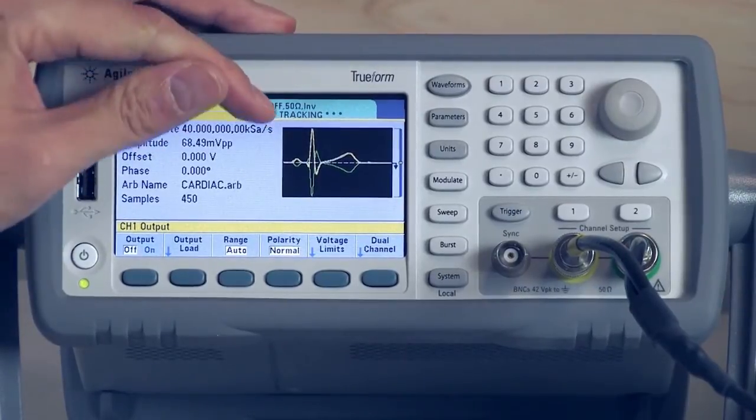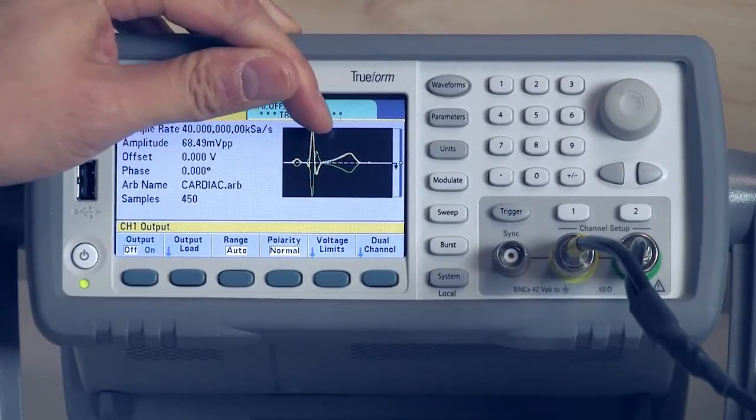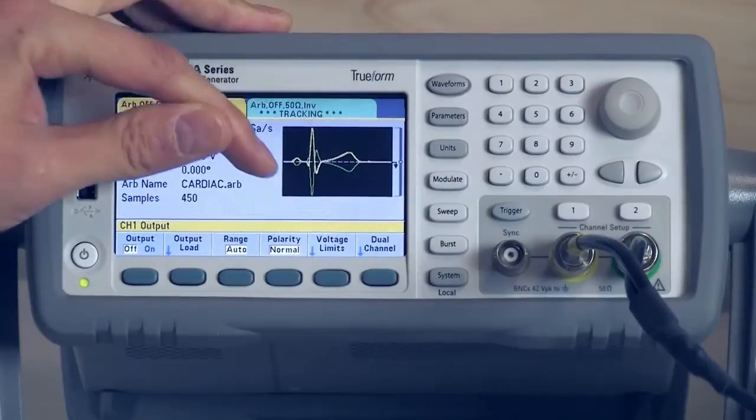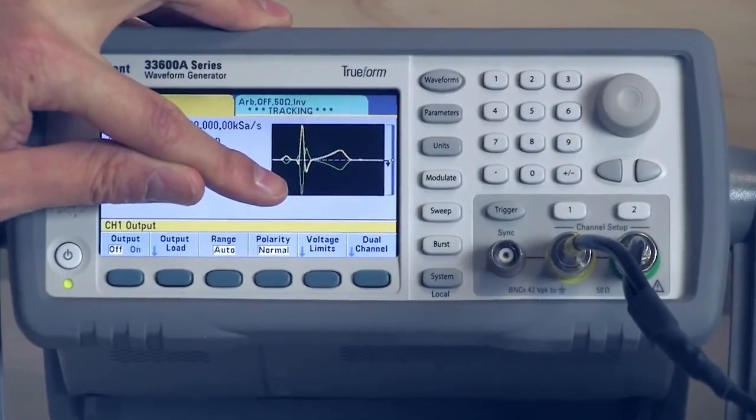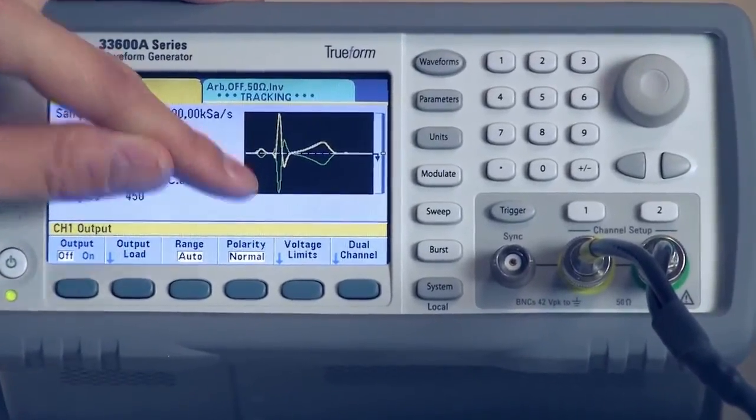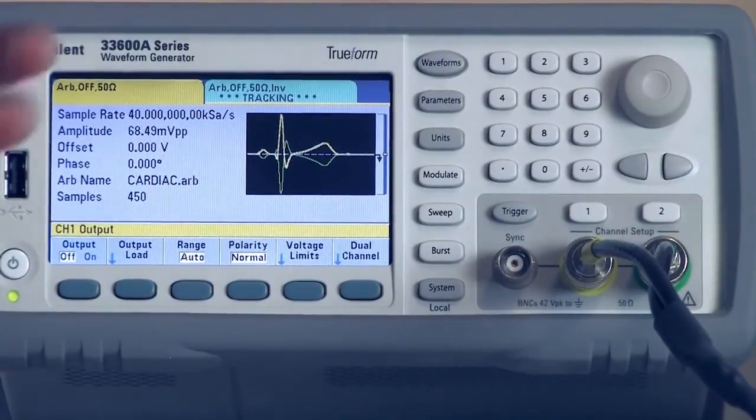So on the screen you can see that the channel 1 output is this yellow one, so it's our normal cardiac signal. But you see this new green signal here, which is our inverse channel 2 signal. So that's our return path.